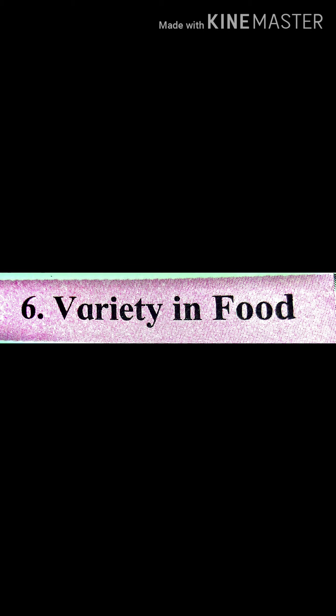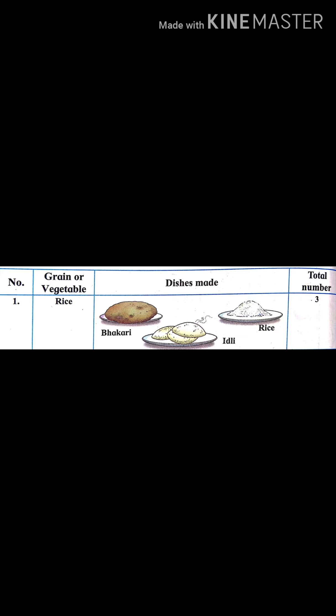Which grains and vegetables does your family buy from the market? As shown below, make a table of different dishes prepared from the different grains or vegetables at home. For example, the dishes which are made from rice are Bhakri, Idli, and rice. If a grain or vegetable is used to make more than one food item dish, write the total number of such items in the next column.